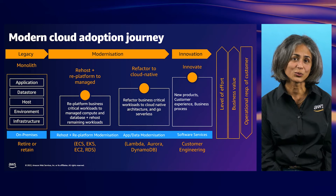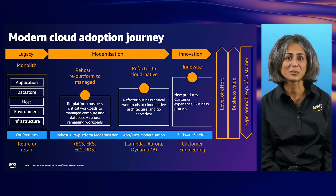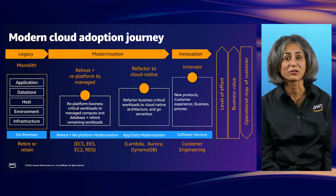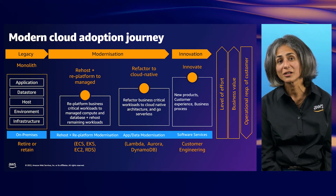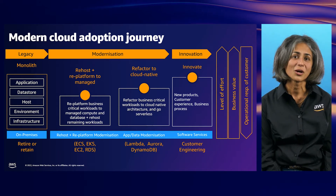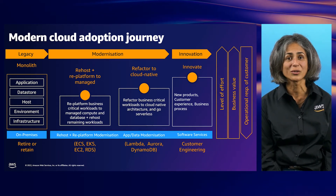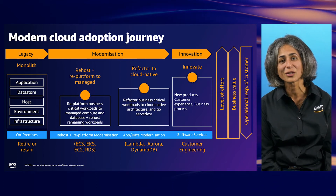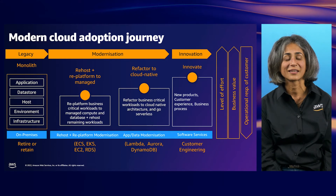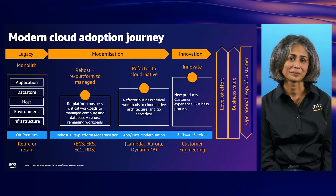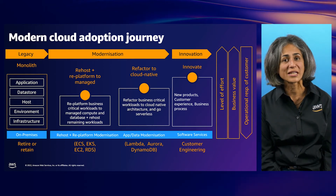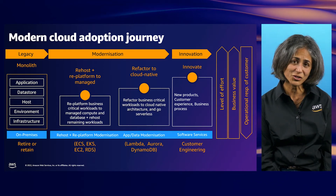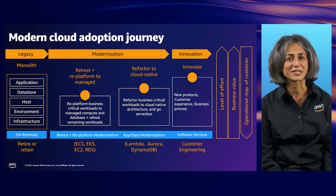It can range from EC2 — least modernisation — where customers can build and run everything and manage operational activities such as integration, scaling, security and patching, in addition to code, all the way to serverless — the most modernisation — where customers only manage the application code and AWS manages the operational activities. We encourage customers to decide based on specific business needs, their team's expertise and their application needs. However, lift-and-shift migration to EC2 alone is not sufficient to unlock full cloud potential. Migration, coupled with modernisation, maximises cloud benefits for customers.